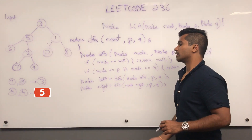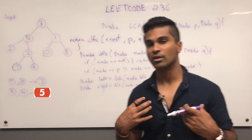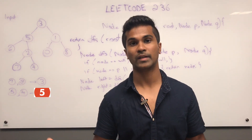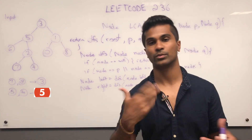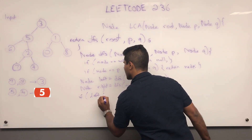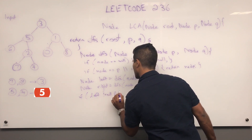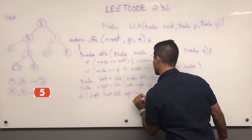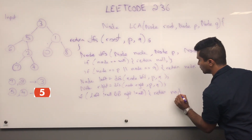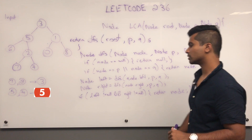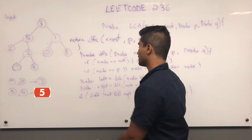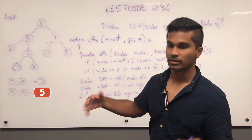Now, if a given node sees that both its left and right results are non-null, that means it's found the least common ancestor — which is itself. So if left is not null and right is not null, we return node. Otherwise we just return whichever one is non-null, and if they're both null it's okay — just return null.